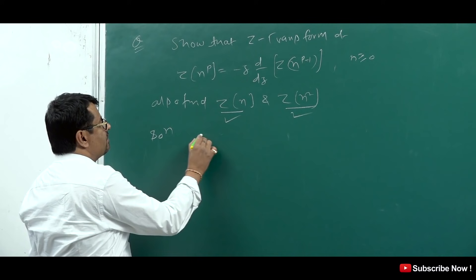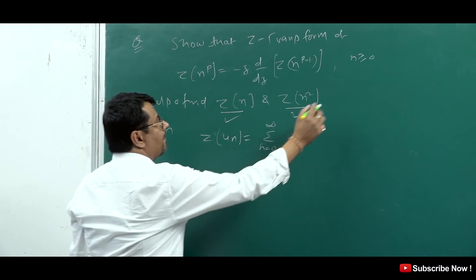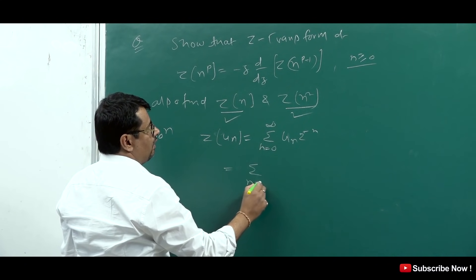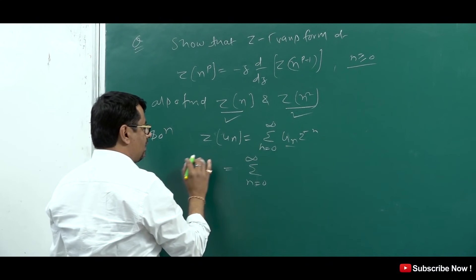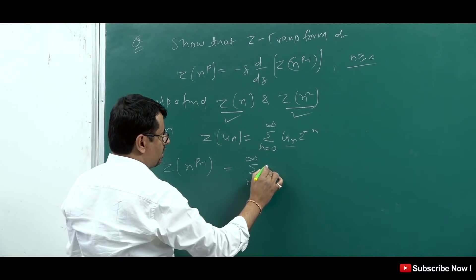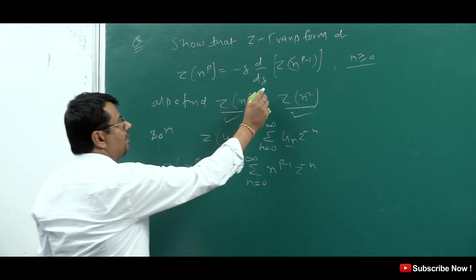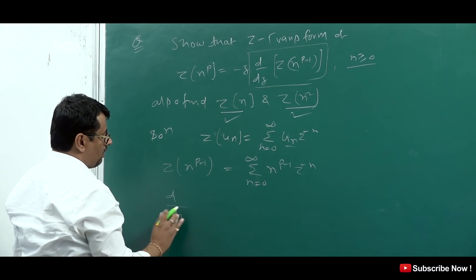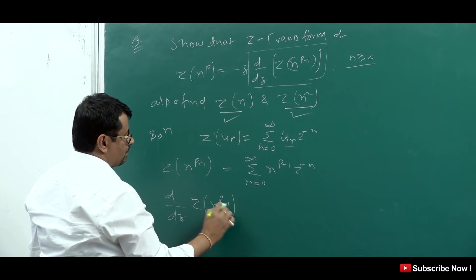We know the formula: Z-Transform of u(n) equals summation from n=0 to infinity of u(n) times Z^(-n). Here u(n) = n^(p-1), so we write: Z{n^(p-1)} = summation from n=0 to infinity of n^(p-1) times Z^(-n). Now we differentiate both sides with respect to Z: d/dz of Z{n^(p-1)} equals summation from n=0 to infinity of n^(p-1) times (-n) times Z^(-n-1).